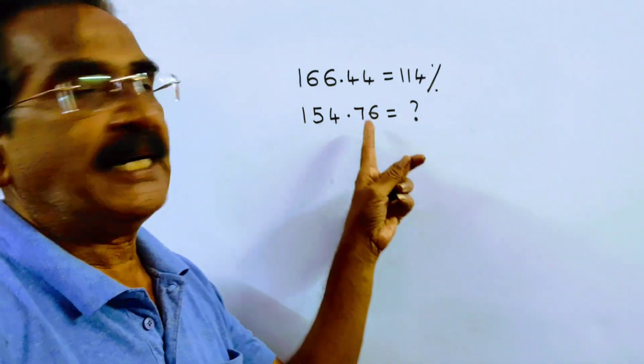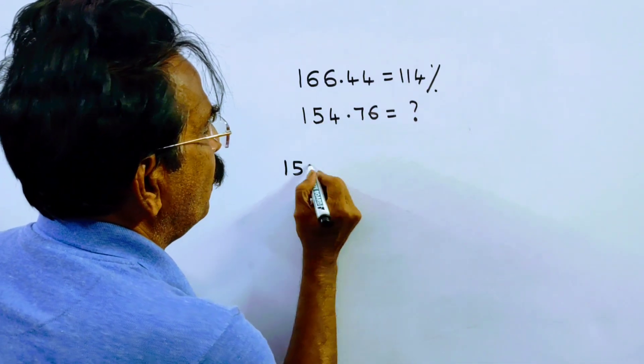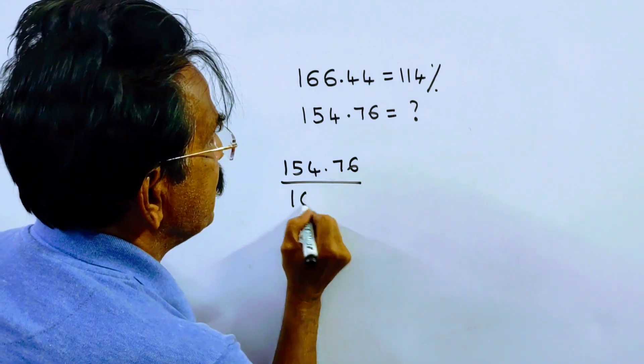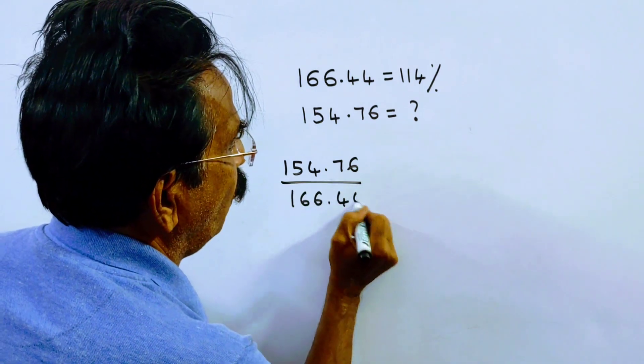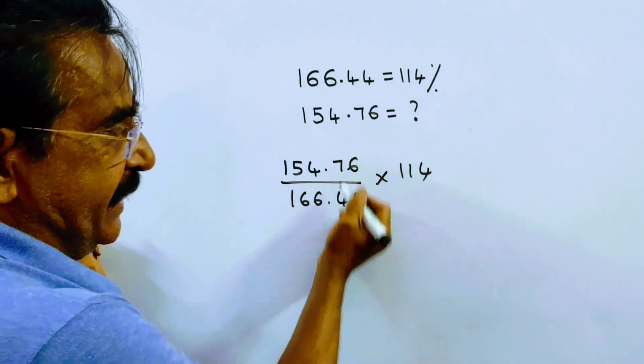Then Rs. 154.76 is equal to how much? So Rs. 154.76 upon Rs. 166.44 into 114. Friends, we can remove the decimal.